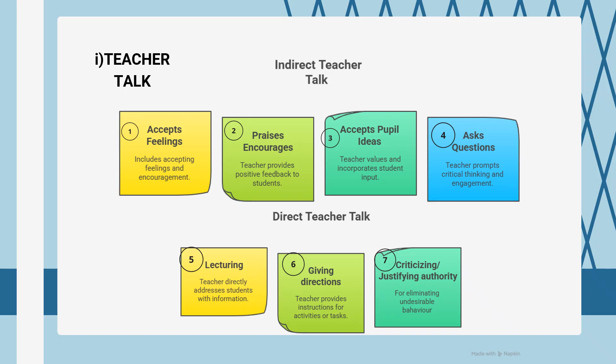Indirect teacher talk is more student-centric and creates a democratic classroom environment. In these categories, student participation and creativity are high. The teacher accepts the feelings, emotions, and thoughts of students, and praises them by saying 'good job' or 'excellent.' The teacher also accepts student answers and asks open-ended questions — all of these fall under indirect teacher talk.